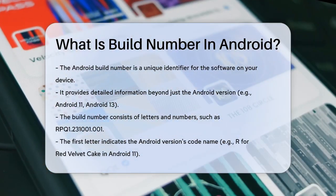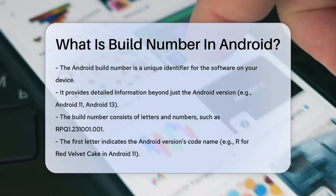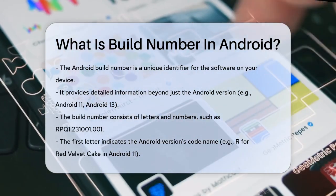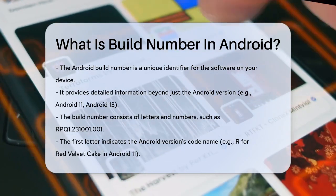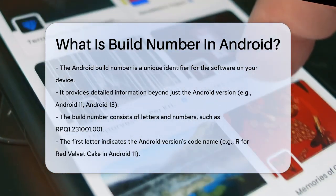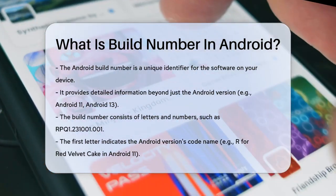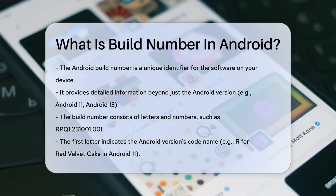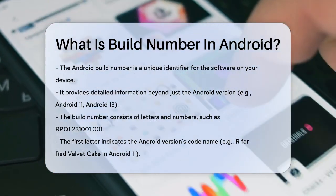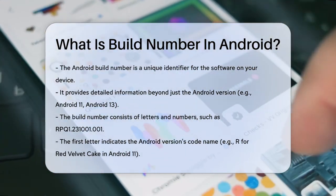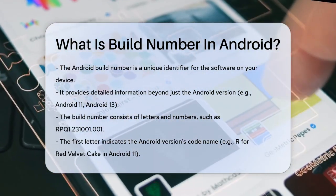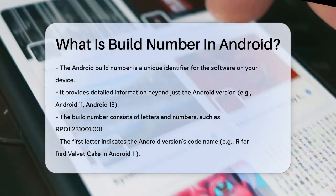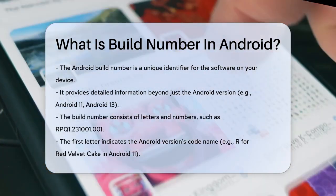When you hear about Android versions like Android 11 or Android 13, you're only getting part of the story. The Build Number provides more detailed information about the specific version of Android running on your device. It's a complex identifier made up of letters and numbers, such as RPQ1.231001.001.